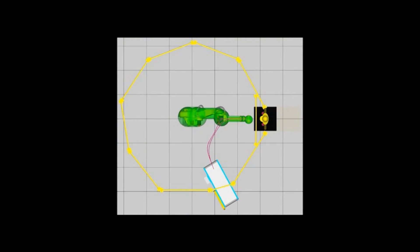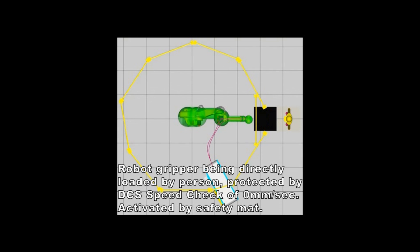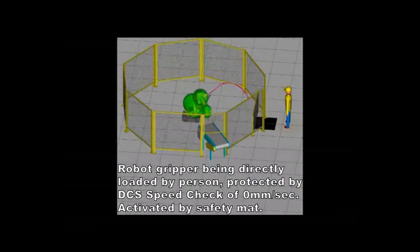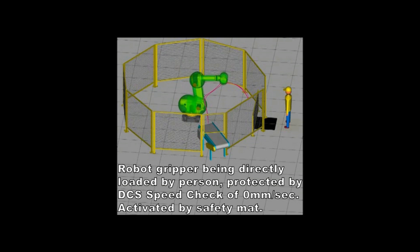With DCS Speed Check, the operator can interact directly with the robot to load the robot's gripper directly, thus eliminating costly fixturing and turntables.